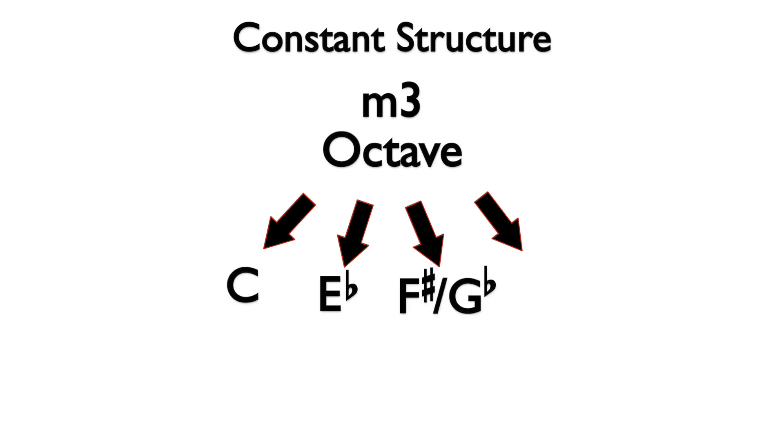The minor 3rd divides the octave into four parts. Starting on C and ascending gives us C, E flat, F sharp or G flat.